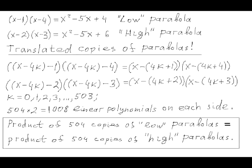Let's see if we can erase those factors in such a way that the equation with the remaining 2016 factors on both sides doesn't have any real solutions. All the factors of the target equation are linear polynomials in the form x minus a, where constant numbers a are 1, 2, 3, etc., up to 2016.